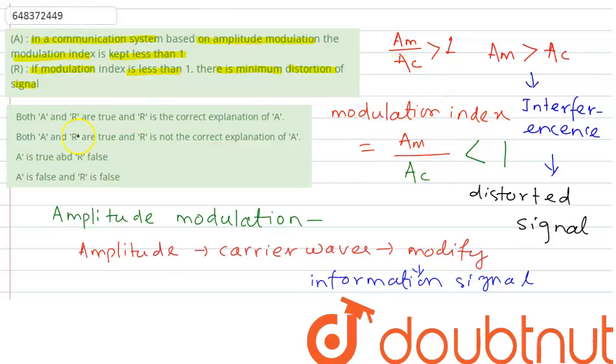So the assertion is correct because we always keep the modulation index less than 1 and it is to reduce the distortion from that signal.